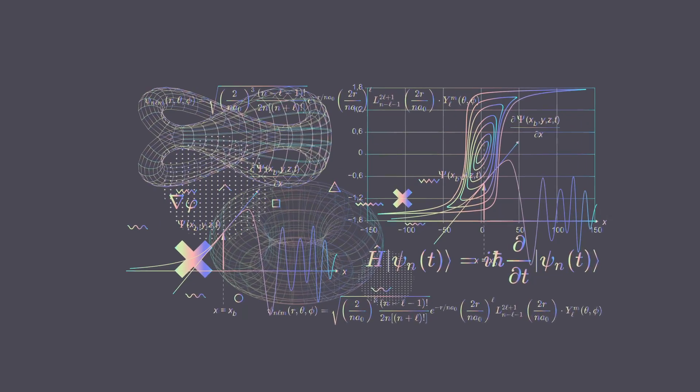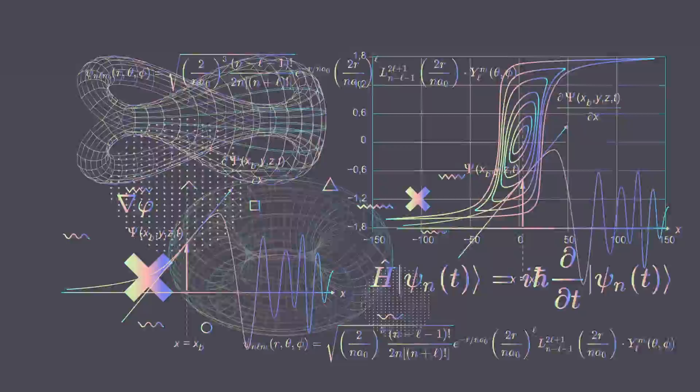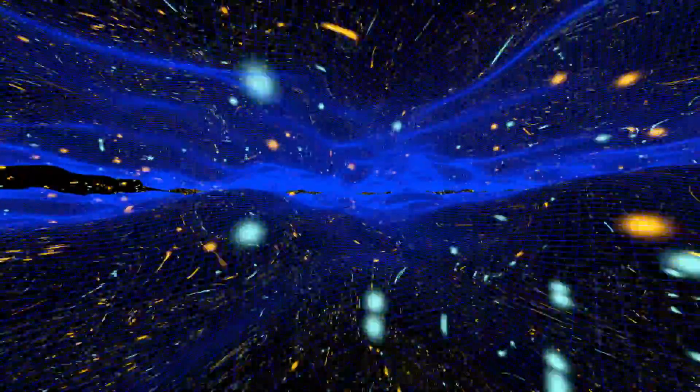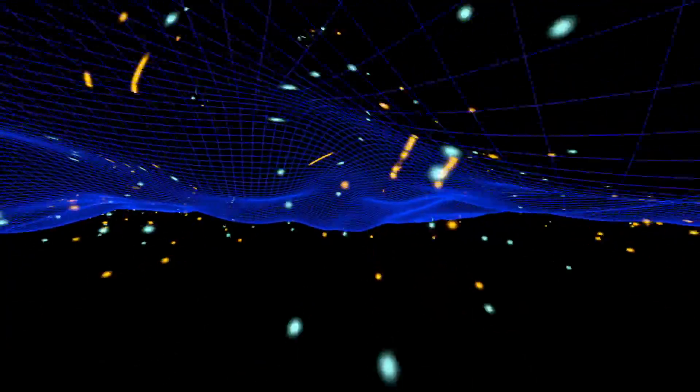So physicists love equations for good reasons. In words, the Schrodinger equation says any one wave can be decomposed into different energy parts, and every energy part evolves at a separate rate. So the energy of the wave is proportional to how fast it evolves. That's the Schrodinger equation. That's the entire thing.